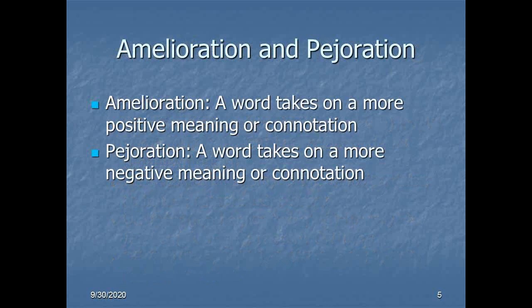That's generalization and narrowing. Now it's time to move on to amelioration and pejoration, our next pair. Amelioration is simply a word taking on a more positive meaning or connotation — it is ameliorated, made better. Pejoration, on the other hand, is a word taking on a more negative meaning, either denotatively or connotatively — so it becomes in some sense a pejorative; it moves down the social scale. Let's take a look at a few examples and see how some Old English words adapted to life under Norman rule.